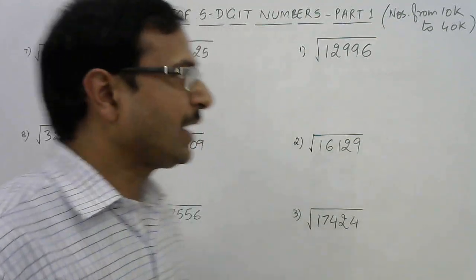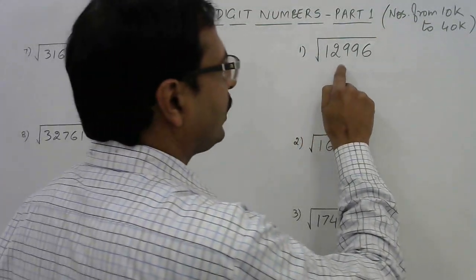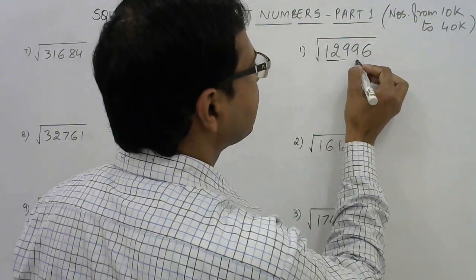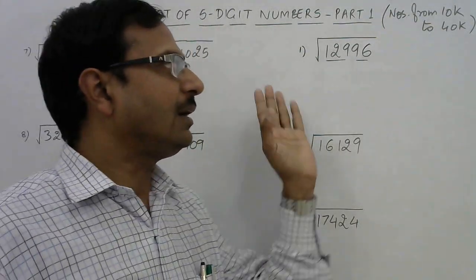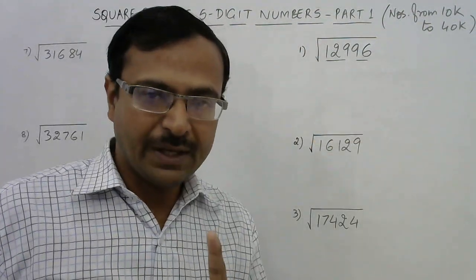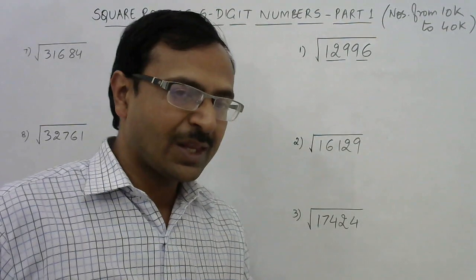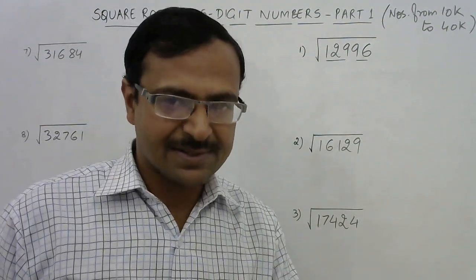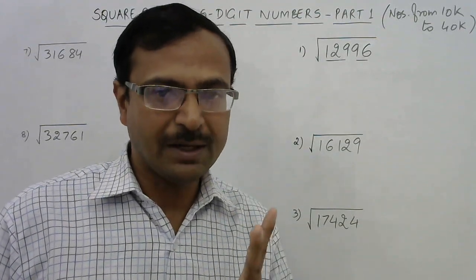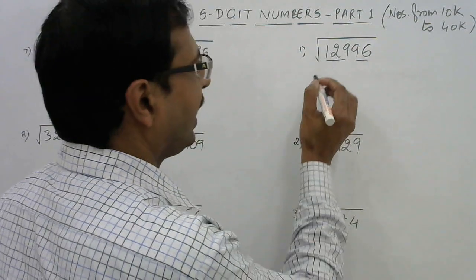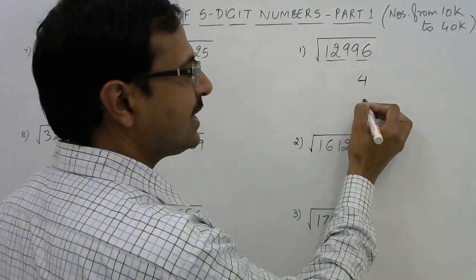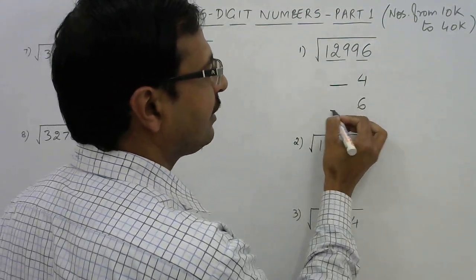Let us see this trick. First of all I am taking 12996. I will divide this number into two parts: the first three digits and the last two digits. The last two digits are 96, and the number is ending with 6. Whenever a number ends with 6, the square root of that number ends with two possible digits — either 4 or 6 — and we will have some number in front of this.